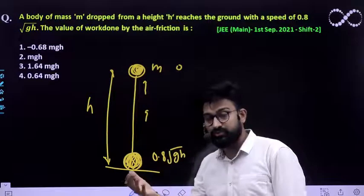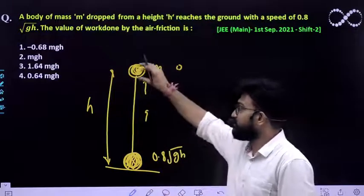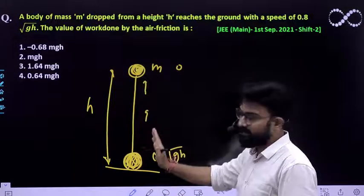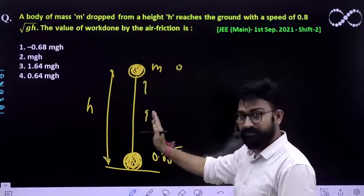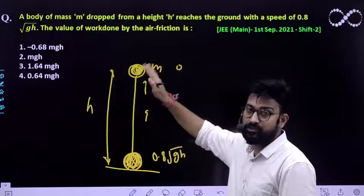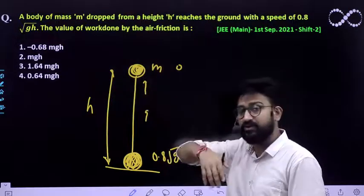So that means it has to do negative work because this particle is moving in this direction and the frictional force is in the upward direction. So this frictional work done must be negative.